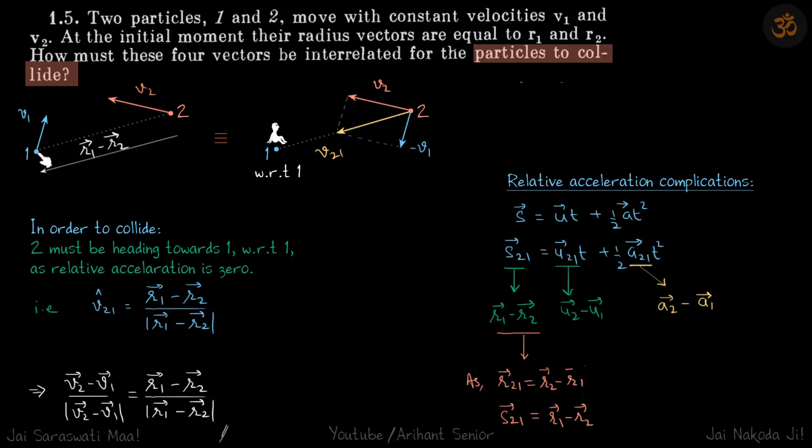Eventually they are colliding. The displacement of 2 with respect to 1 is in this direction. This direction is r₁ - r₂, so that's why s₂₁ = r₁ - r₂.